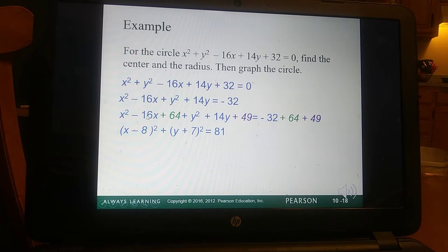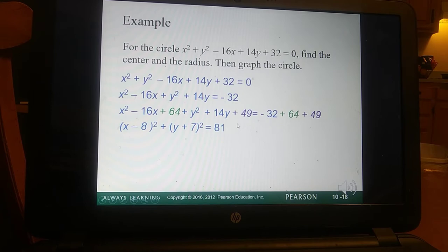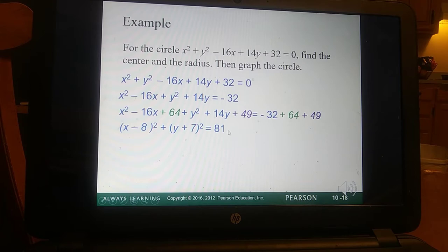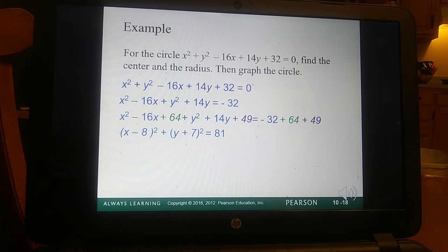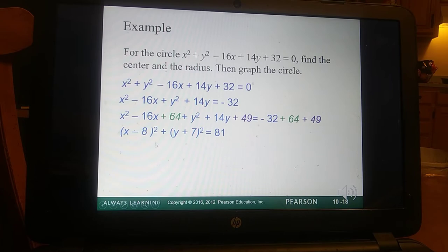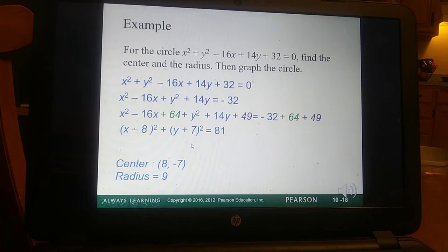And then we factor. Remember, this is going to become a perfect square. So back to that original number. 16 divided by 2 gave us 8. And then 14 divided by 2 gave us 7. And then we just combine the right-hand side and that gives us 81. So what is this saying? It's saying it's a circle with radius 9, because the square root of 81 is 9. And then our center would be at positive 8, negative 7. Remember, you always change the sign.